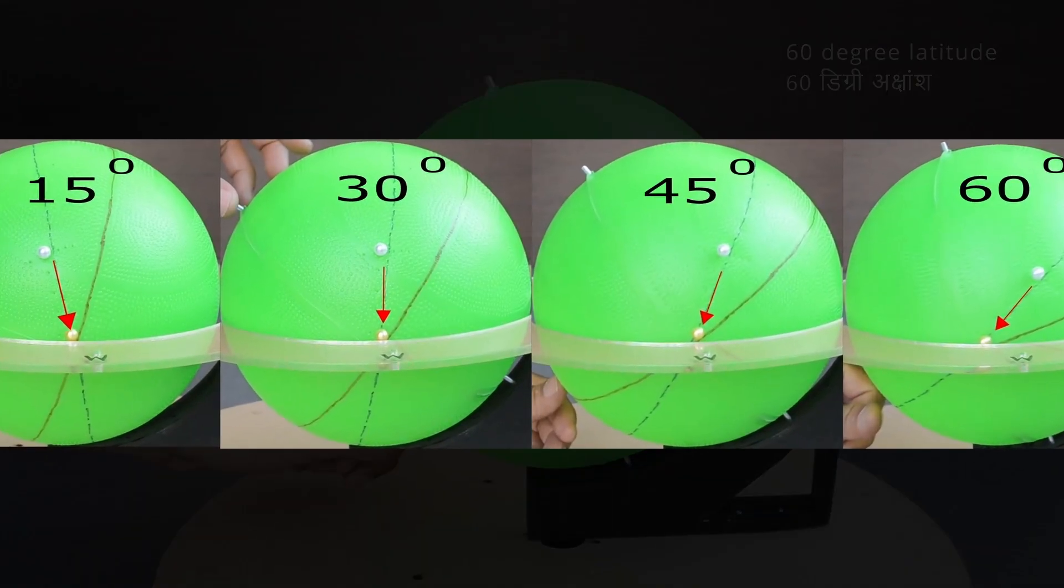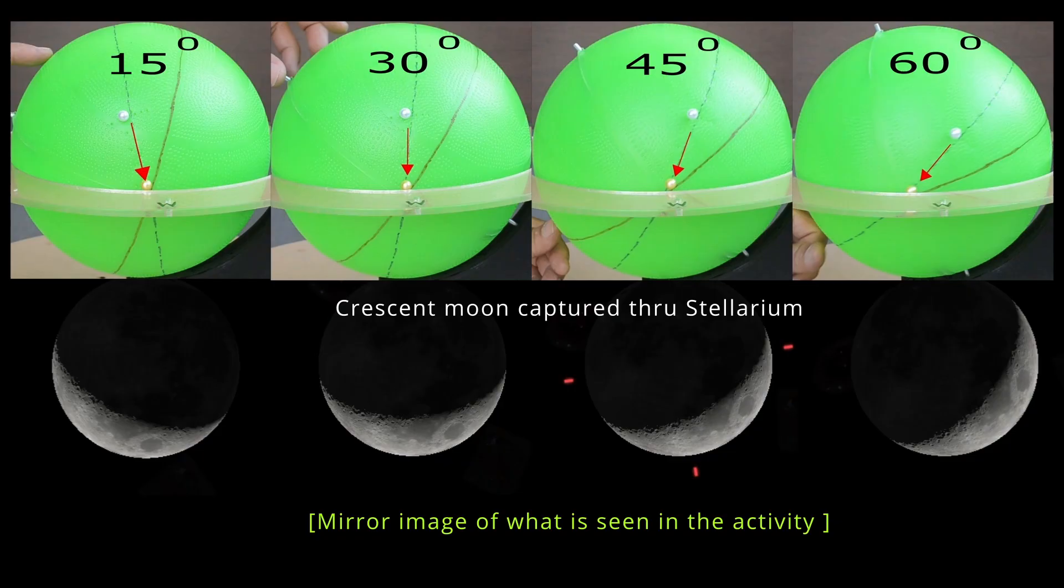We can take help of Stellarium as well to view this change in orientation. Just keep in mind that we are looking from inside the sphere in Stellarium, while for our activity, we are looking from outside the sphere.